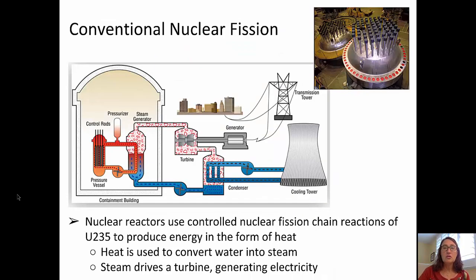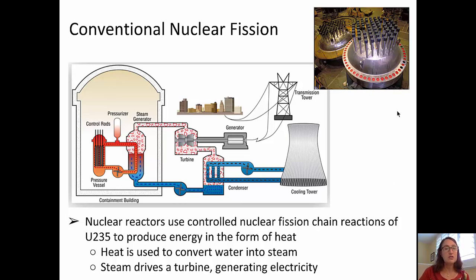In conventional nuclear fission, we use fuel assemblies, such as shown in this top picture, in a nuclear reactor, where there's a controlled nuclear fission chain reaction that uses uranium-235 to produce energy in the form of heat. The heat is used to convert water into steam, and that steam drives a turbine, generating electricity.